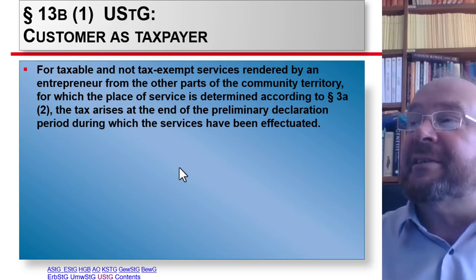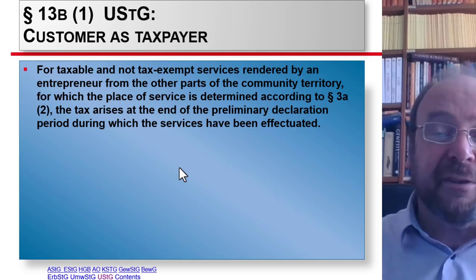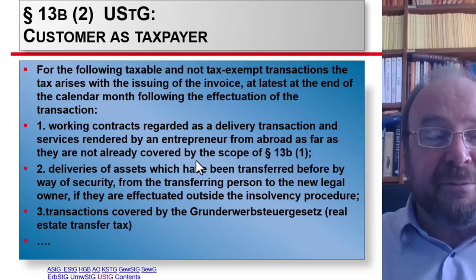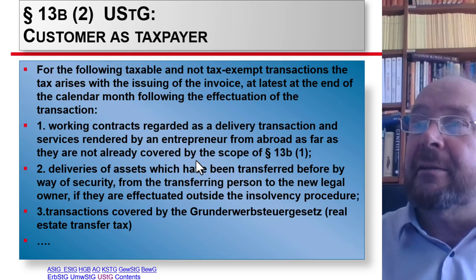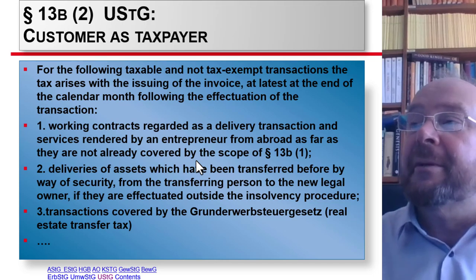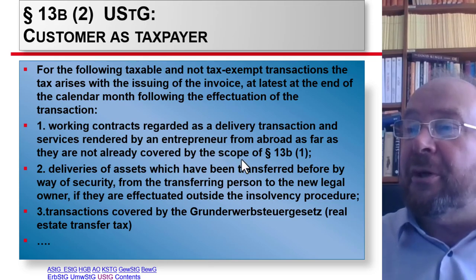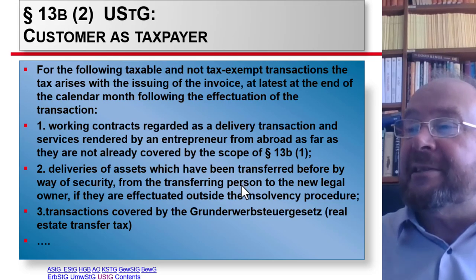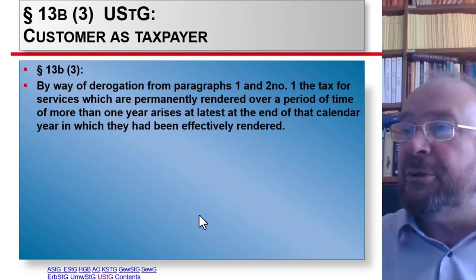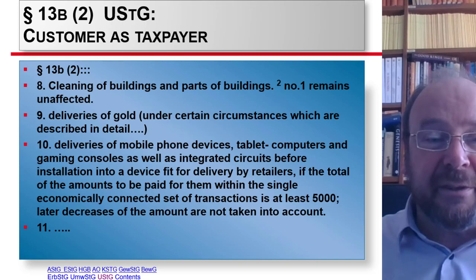In the case of §1(1) No.1 — which was our case of taxability — the entrepreneur is the taxpayer. Exemptions could be found in §13b, but §13b does not apply. §13b refers to taxable and non-tax-exempt services rendered by an entrepreneur from other EU states — not our case. §13b also gives a long list of other things which might entail a reversal of tax payership, such as working contracts and services rendered by an entrepreneur from abroad. Nonsen is from Germany, so none of these apply. So indeed §13(1) and §13a were the correct rules, not §13b.